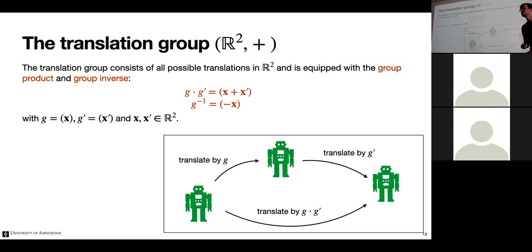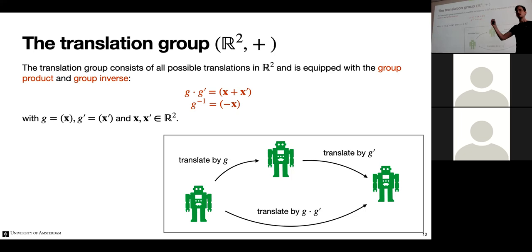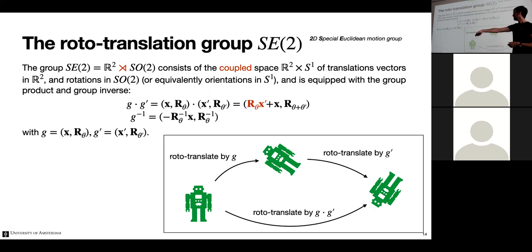Group elements can be thought of as parameters for a transformation. For translation, a group element G describes a translation. If I then apply another translation G-prime, the group product describes the net operation of applying two group transformations one after another — that's how you can think of the group product: it combines two parameterizations of transformations into a single transformation.